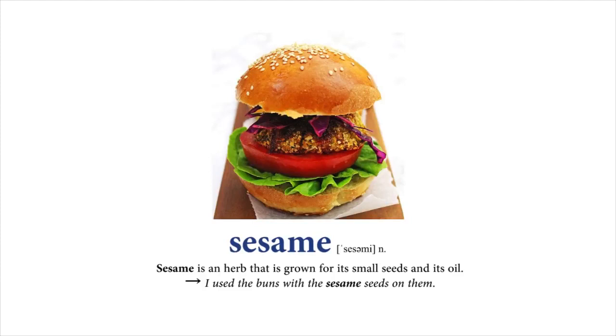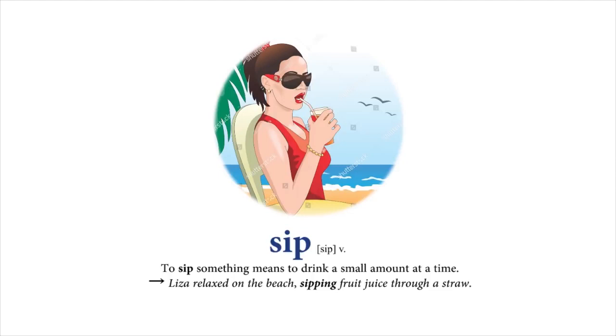Sip: To sip something means to drink a small amount at a time. Liza relaxed on the beach, sipping fruit juice through a straw.